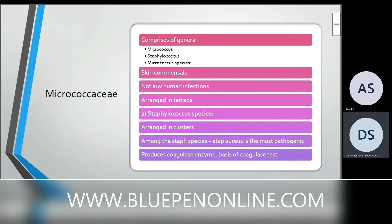Micrococcus species are mostly skin commensals and not associated with human infection; they are arranged in tetrads. Staphylococcus aureus is arranged in clusters. Staph aureus is the most pathogenic species and produces the coagulase enzyme, which is the basis of the coagulase test.